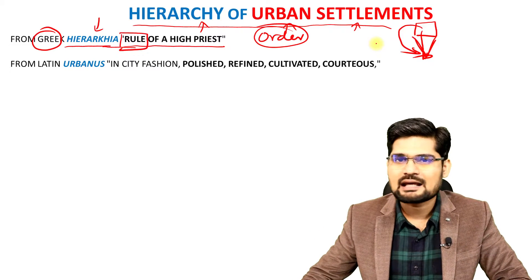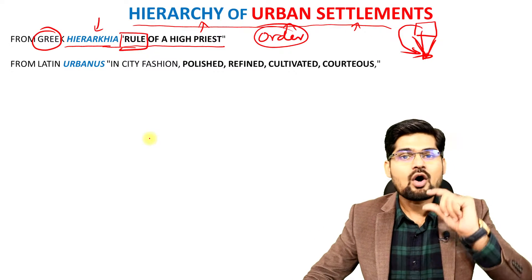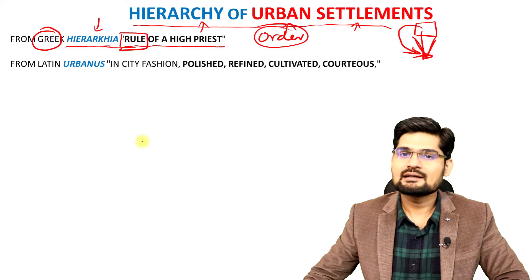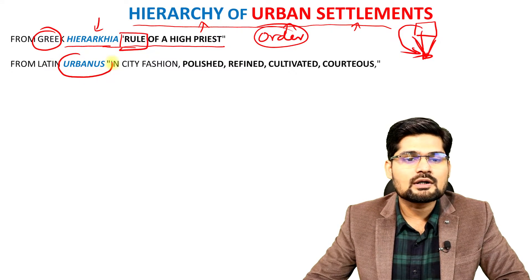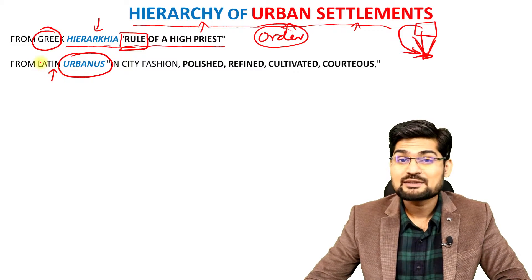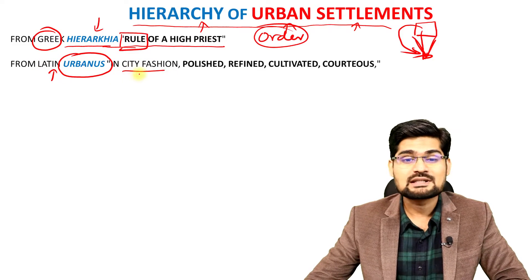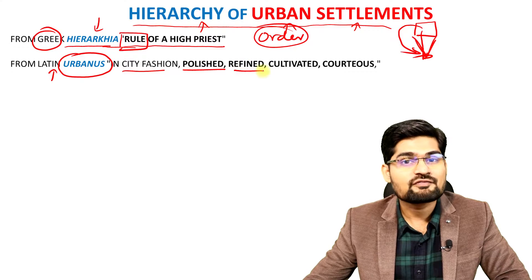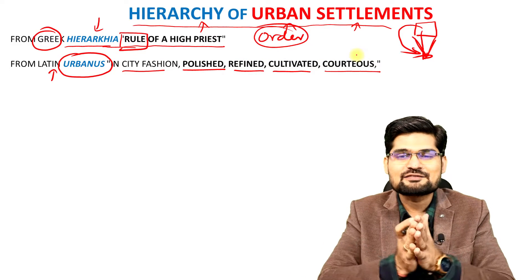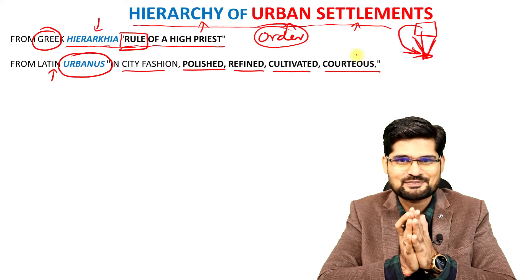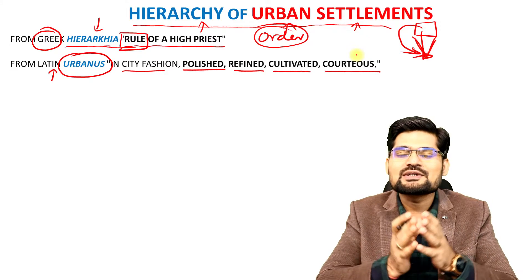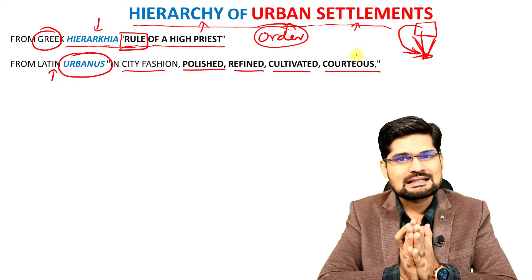This kind of concept is called hierarchy. In terms of settlement geography, there is an ordering. Then there is another word, 'urbanus', coming from Latin origins, which basically means a city fashion — polished behavior, refined people, cultivated, courteous. These are the characteristics of urbanization. Urban people are supposed to be smart people.